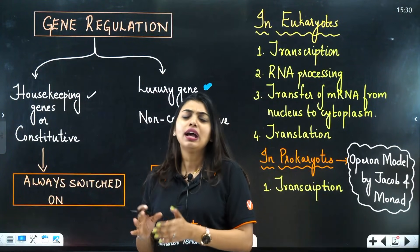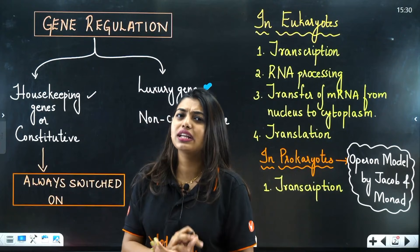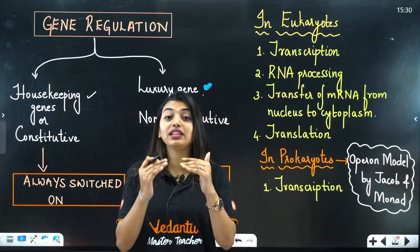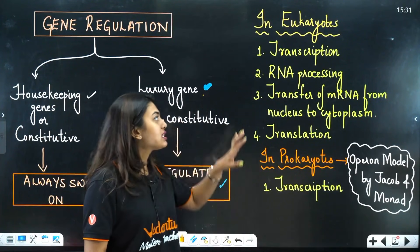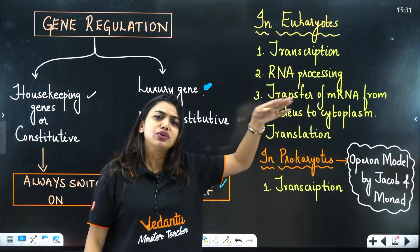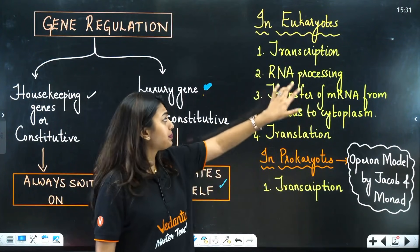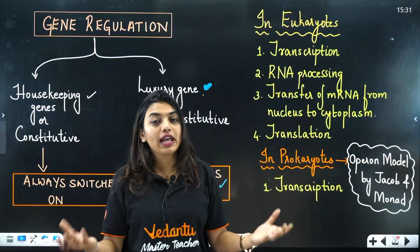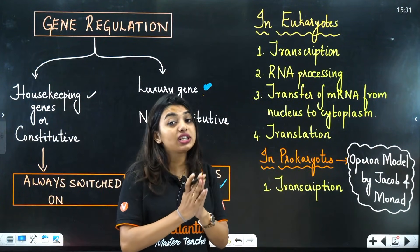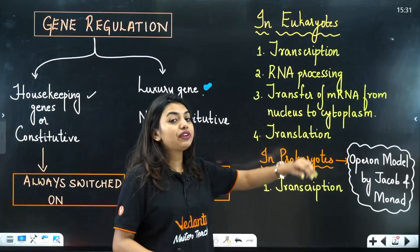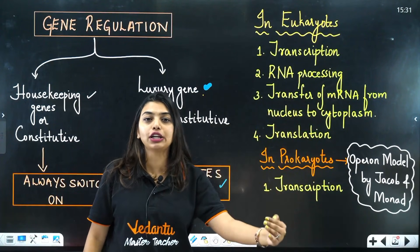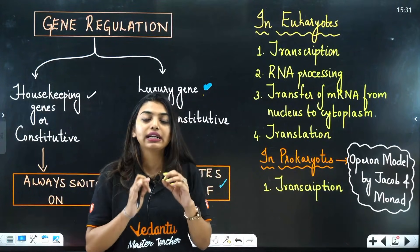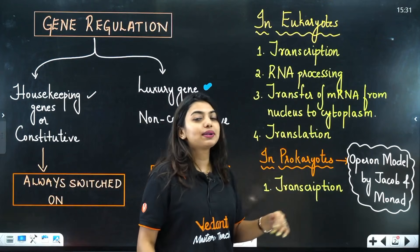Now, when do genes actually get switched off? In eukaryotes, there are four places where a gene can decide to switch off: first, during transcription; second, during RNA processing — that is, during tailing and capping of the mRNA; third, when the mRNA is transferred from the nucleus to the cytoplasm.